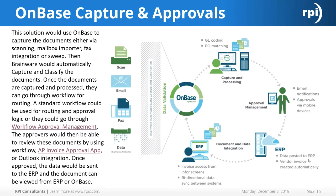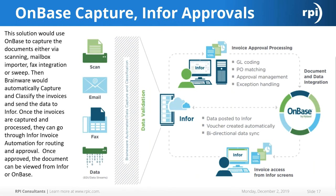Another solution is OnBase Capture with Infor Approvals. The same idea applies — you use OnBase for scanning, email, fax, EDI, or DIPs to bring data in, and I would still recommend going through Brainware for data validation and classification. The difference here is that you use Infor for your invoice approval, which allows for GL coding, PO matching, approval management, and exception handling. Once approved, the document is stored in OnBase and is visible in both your Infor and OnBase systems.